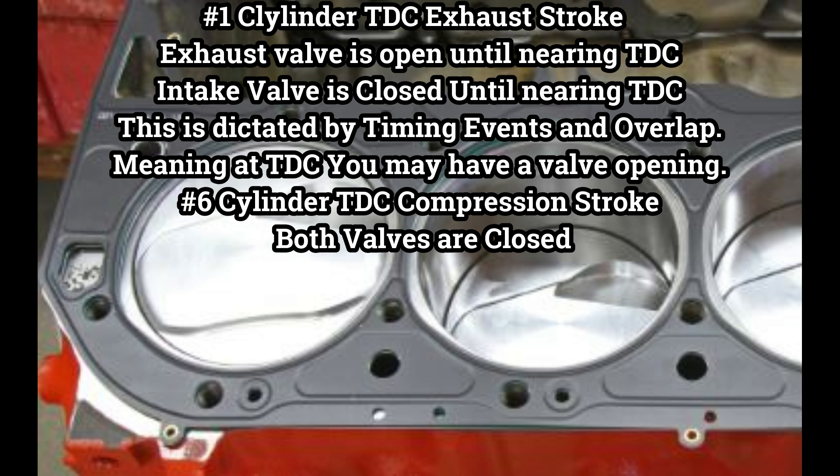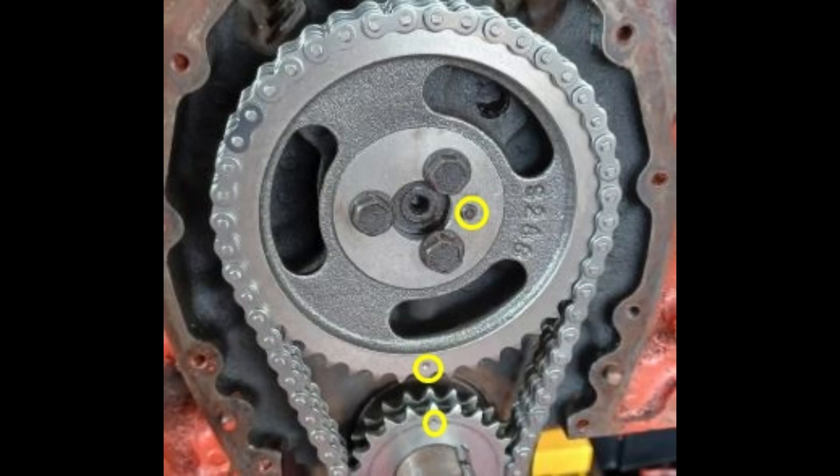Near TDC on the exhaust stroke, the intake valve could be opening or already started to open depending on the cam specs and overlap. This is why you need to know if you're at top dead center on the compression stroke - when both valves are closed - or on the exhaust stroke - when you could actually have both valves still open or the intake starting to open. So back to our small block Chevrolet: setting our crank gear at 12 o'clock and our cam gear at 6 o'clock - the dowel is located at 3 o'clock - this is how your manuals and most Chilton books will tell you to install your timing gears.